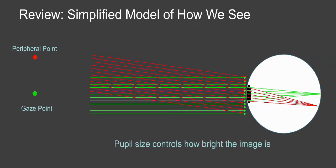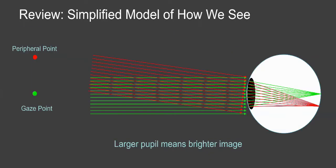So the pupil size changes how bright everything is, it changes how many rays get in, but it doesn't change the image that you see. You still see the same two points and you see them with the same visual acuity, whether your pupil is large or small.